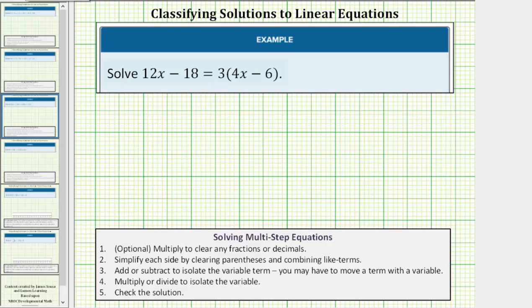Let's try to solve this equation and see what happens. Following the guidelines to solve a multi-step equation, the first step would be to clear the parentheses on the right side of the equation by distributing three. So the left side remains 12x minus 18.